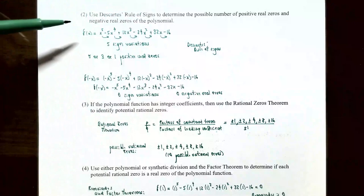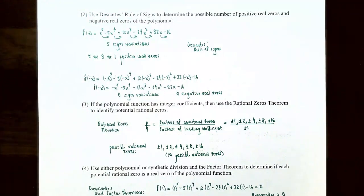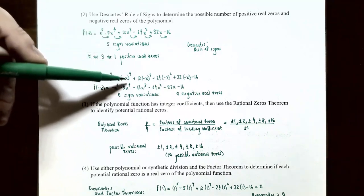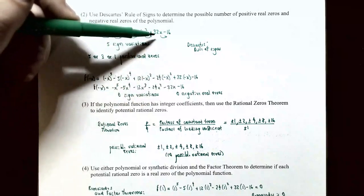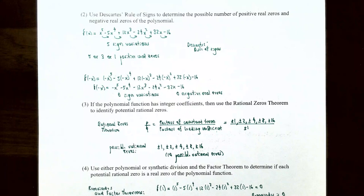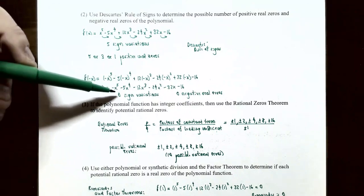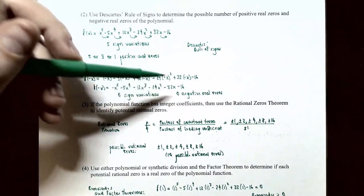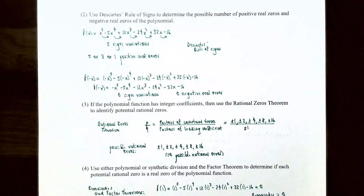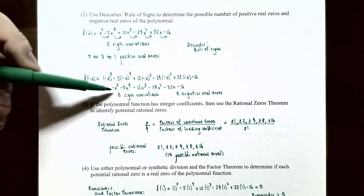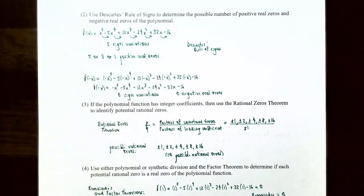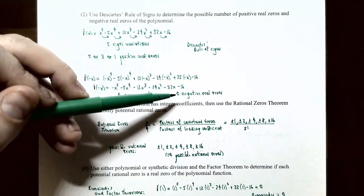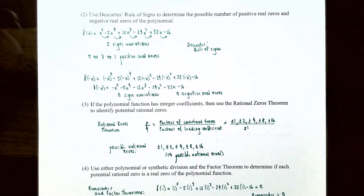For f of negative x, replacing all x's with negative x and simplifying, we get negative x to the 5th minus 5x to the 4th minus 12x cubed minus 24x squared minus 32x minus 16. Between any two adjacent terms there is no sign variation — all coefficients are negative. So by Descartes' Rule of Signs, there are zero possible negative real zeros.